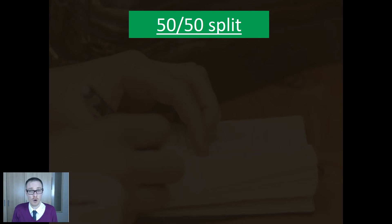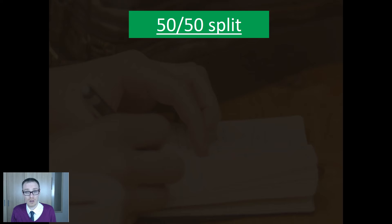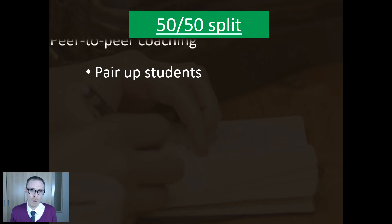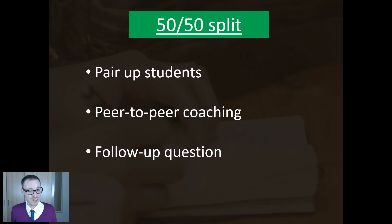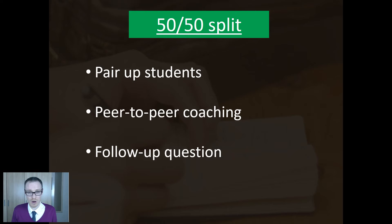The first scenario is a 50-50 split — roughly half your kids have got that second question right, half have got it wrong. How are you going to deal with that? Well, one thing that really works well is to pair up the kids. You get a kid who's got it right, sit them next to a kid who's got it wrong, and it's down to that child to coach the other child about that question and that skill.